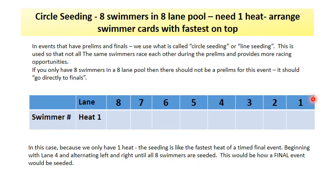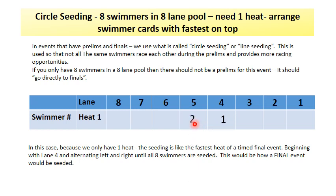We begin by making sure that lane one is on the right hand side of the pool when facing the pool at the start end. You place your fastest swimmer in lane four in an eight-lane pool. You would then place your second fastest swimmer on the left of that faster swimmer, which would be in lane five.